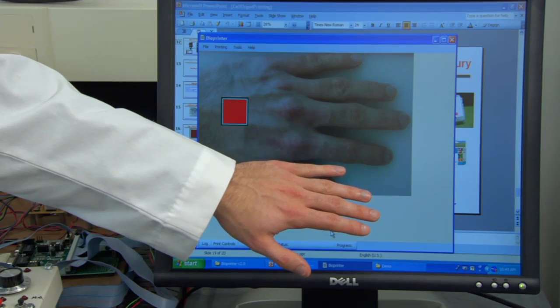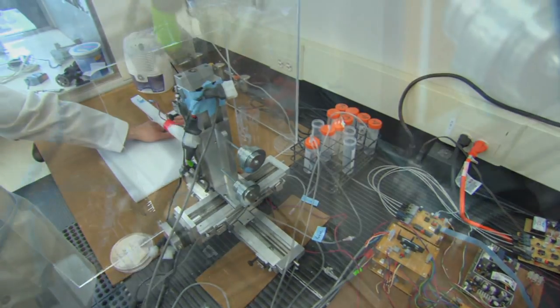So the bioprinter drops each type of cell precisely where it needs to go. The wound gets filled in and then those cells will become new skin.